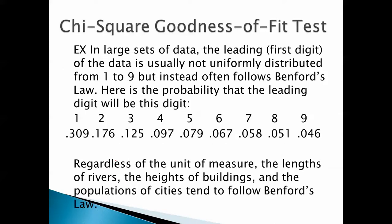For example, in large sets of data, the leading, that is the first digit of the data, is usually not uniformly distributed from 1 to 9, but instead often follows Benford's law. Here is the probability that the leading digit will be this digit. So the probability that the first digit is 1 is 0.309, the probability that the first digit is 2 is 0.176, etc.